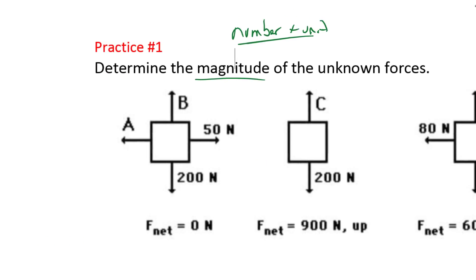So it says that F net equals zero. If F net equals zero that means that this force and this force since they're the only vertical forces they must be canceling each other out. So I know that B is going to be equal to 200 newtons. And A and this 50 newtons must be canceling each other out. So this A must be 50 newtons to the left.